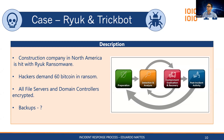We also found Cobalt Strike beacons. Cobalt Strike is a penetration testing tool being used by threat actors constantly — especially in 2020. It's a very powerful framework that allows malware to operate entirely in memory, so there are no files sitting on your desktop. It's running only in processes and RAM — very stealthy and hard to find without the right tools. We found those beacons, identified the IPs and domains they communicated to, and gave them to the IT team to contain.